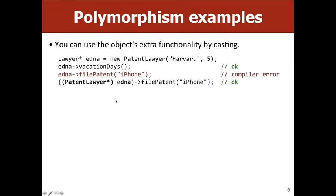For example, Edna is really a patent lawyer. If we call filePatent, the compiler doesn't know that Edna is really a patent lawyer — it thinks Edna is just a plain lawyer, and plain lawyers don't know how to file patents. But if we tell the compiler Edna is actually a patent lawyer, then you can call filePatent. The very next line of code, Edna is no longer considered to be a patent lawyer — she'd be considered a lawyer again.